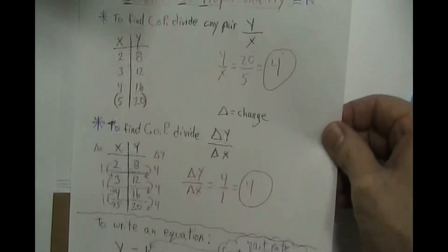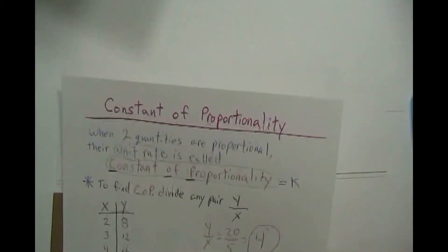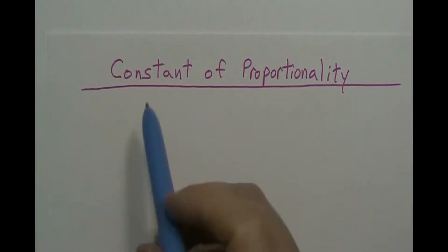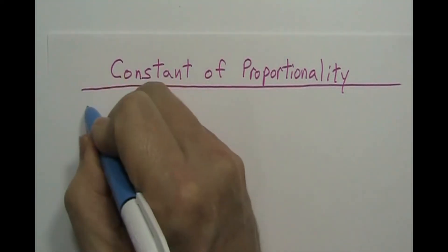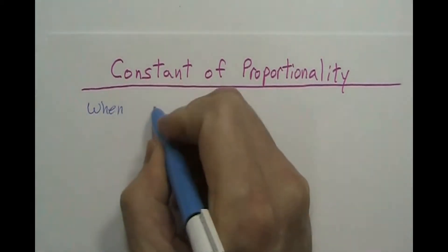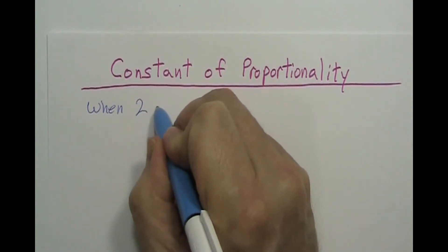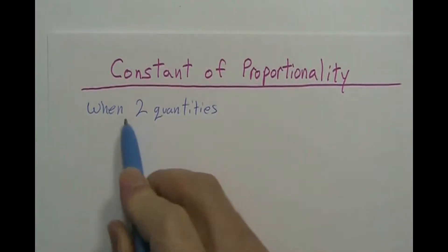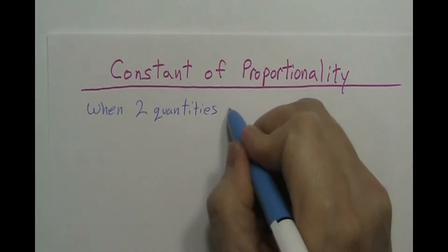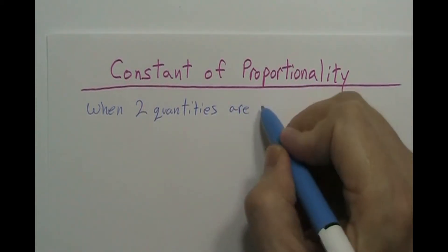Okay, just so you know this is what it looks like when it's all done, so constant of proportionality. So when two quantities, I'll just put the number two, or you could think of units, when two quantities are proportional and there's the word right, well there's part of the word.